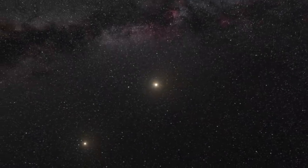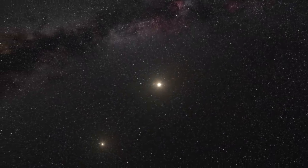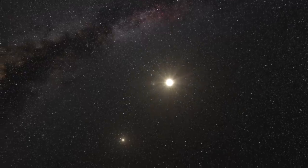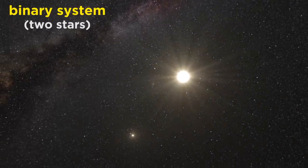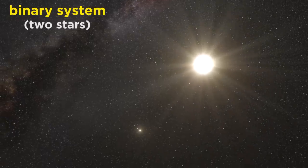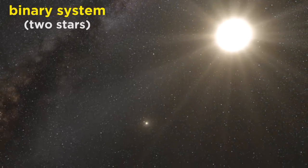A greater percentage of systems are multiple star systems, meaning that they are systems containing two or more stars. In particular, binary star systems, which specifically contain two stars, are exceptionally common.